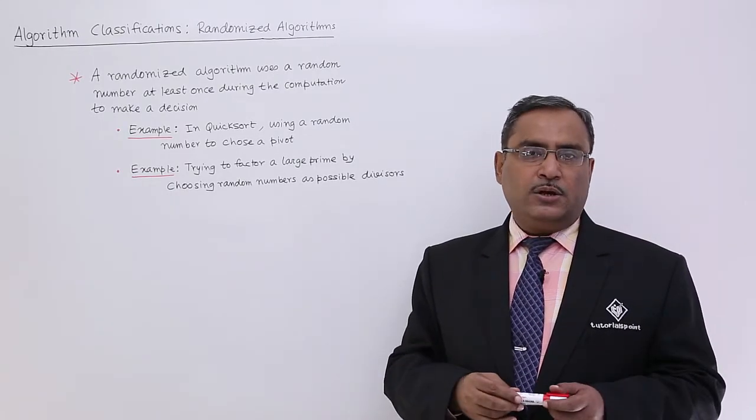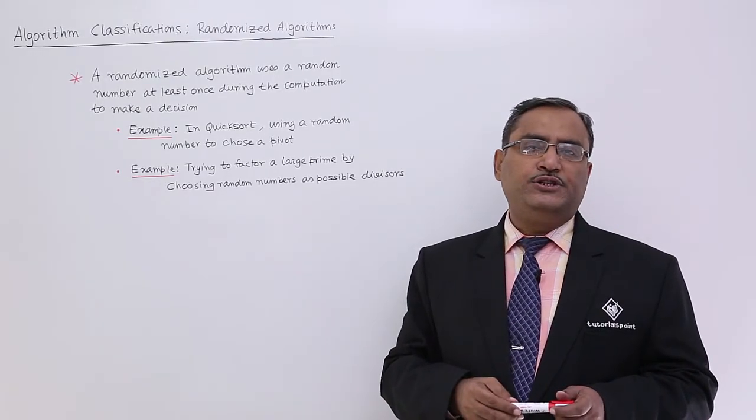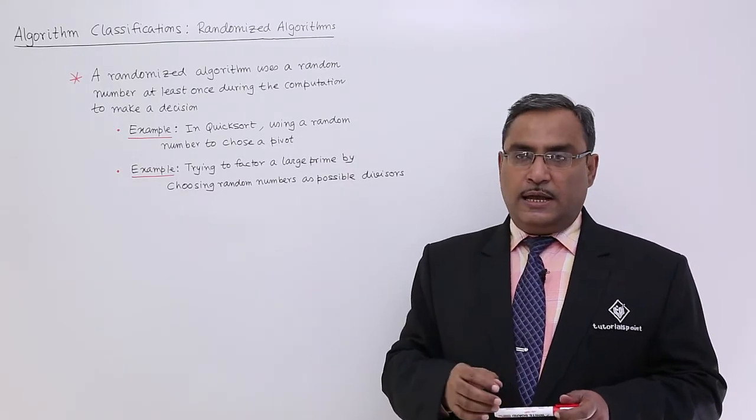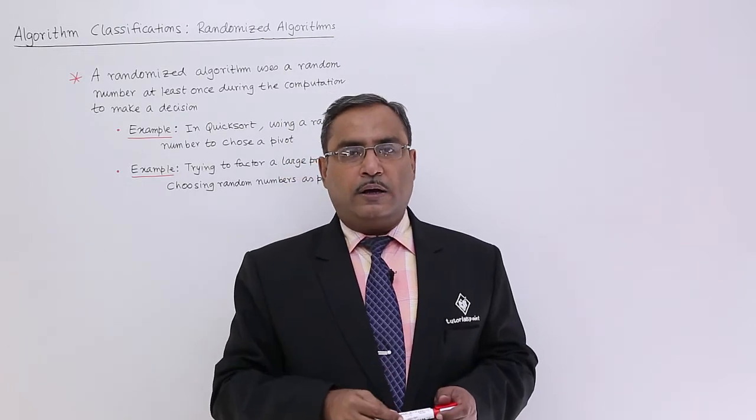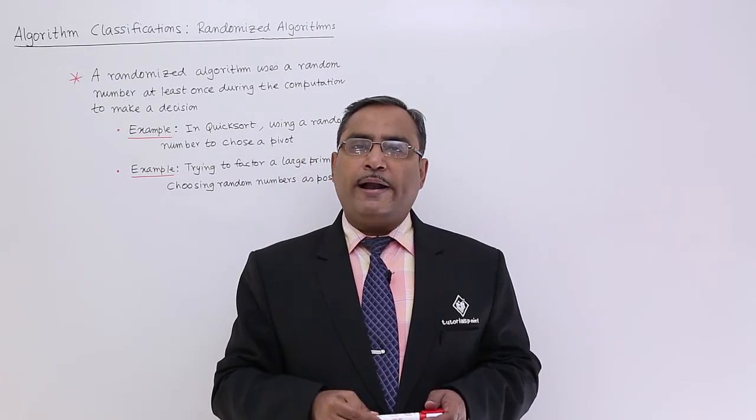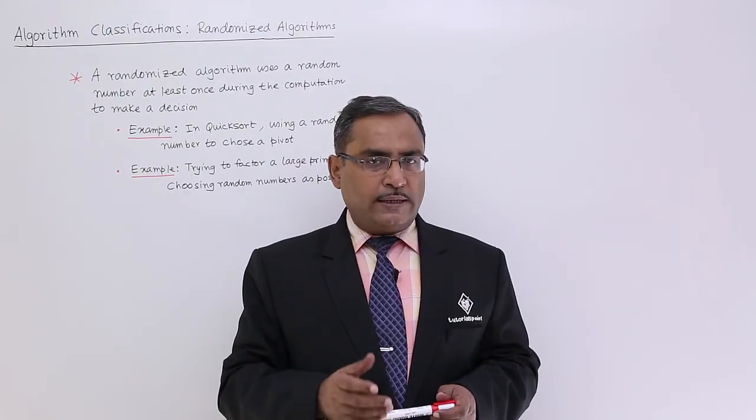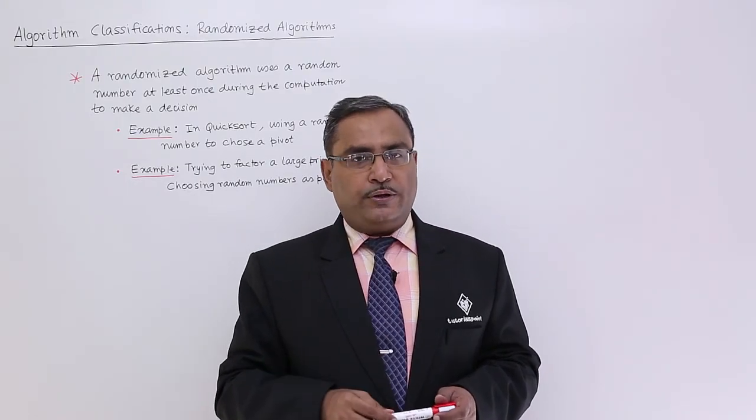So in those cases, we will be using at least once this particular random number generator, which will generate random numbers to take some decisions. And those algorithms doing such type of initiatives will be known as randomized algorithms. I think now the problem is clear to you. What is a randomized algorithm and what are the respective examples? So, thanks for watching this video.